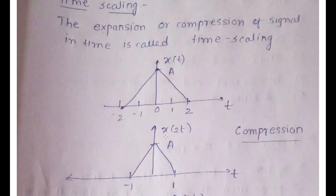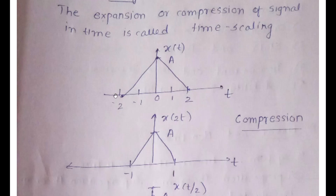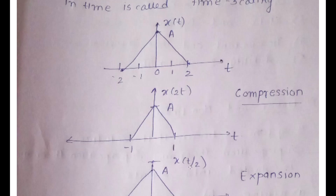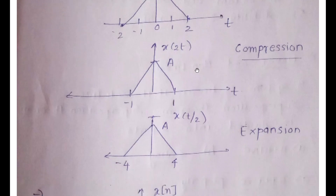Next is time scaling. Time scaling indicates the expansion or compression of a signal in time. For x(2t), it means compression — divide the time scale by 2, so 2 becomes 1 and minus 2 becomes minus 1; the amplitude remains the same. For x(t/2), it means expansion — multiply the time scale by 2, so 2 becomes 4 and minus 2 becomes minus 4; the amplitude remains the same.